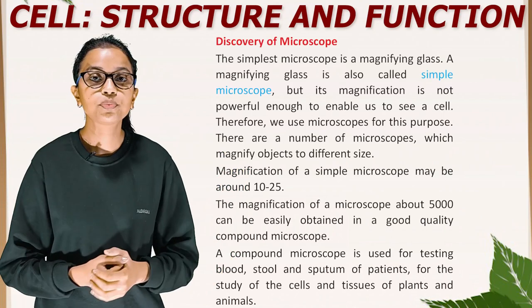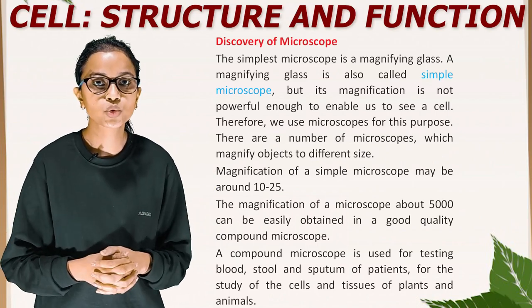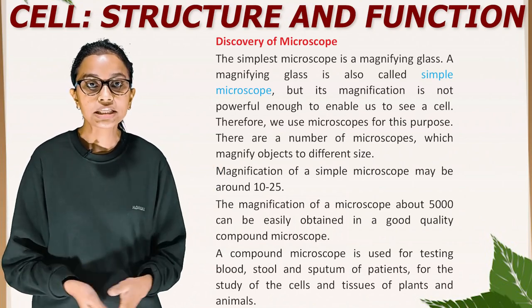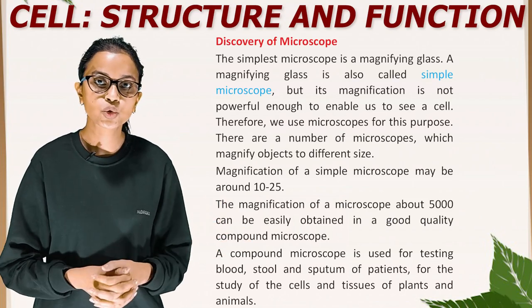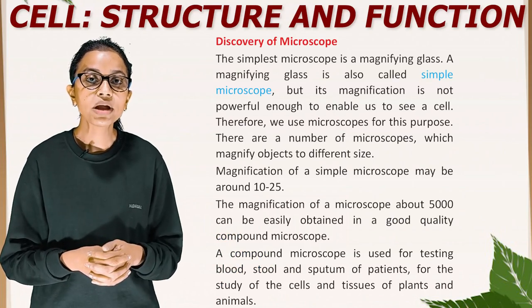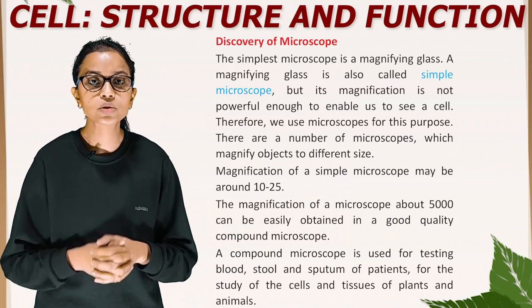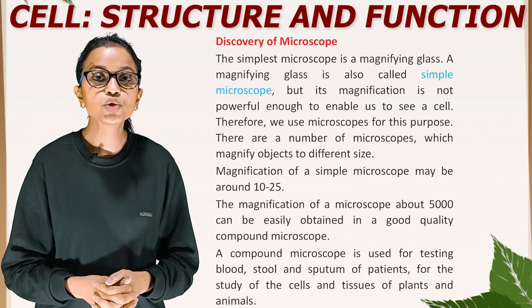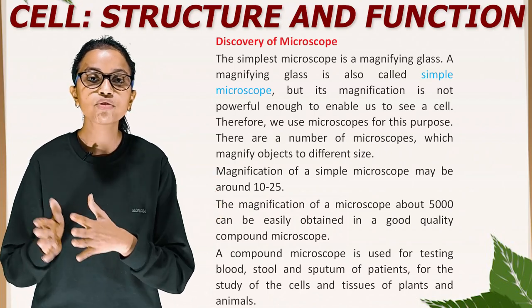Discovery of microscope. The simplest microscope is a magnifying glass. A magnifying glass is also called a simple microscope, but its magnification is not powerful enough to enable us to see a cell. Therefore, we use microscopes for this purpose. There are a number of microscopes which magnify objects to different sizes. Magnification of a simple microscope may be around 10 to 25. The magnification of about 5000 can be easily obtained in a good quality compound microscope. A compound microscope is used for testing blood, stool, and sputum of patients, and for the study of the cells and tissues of plants and animals.